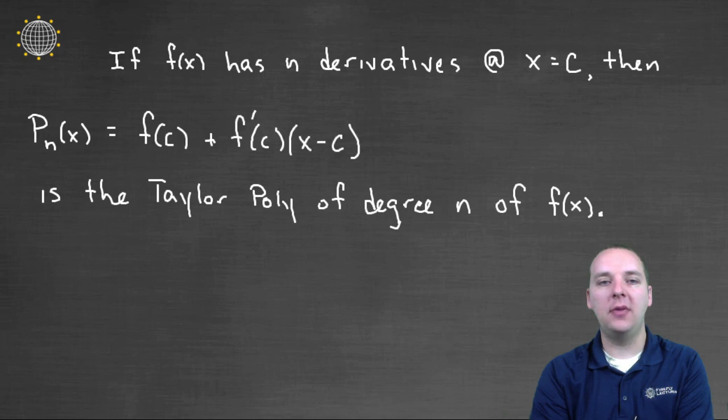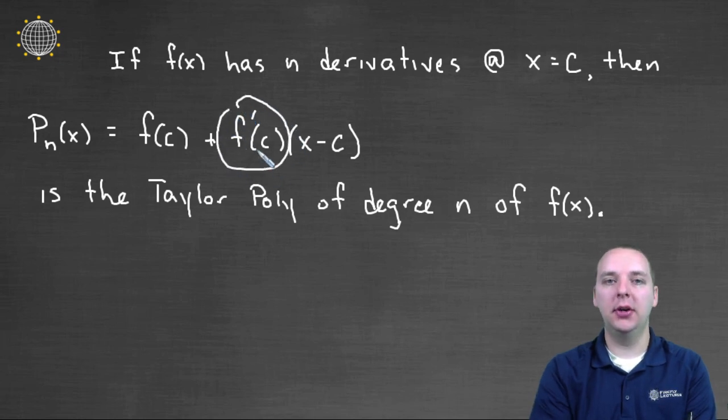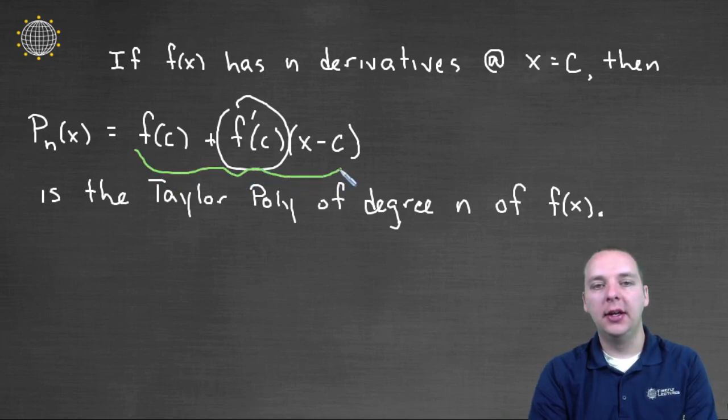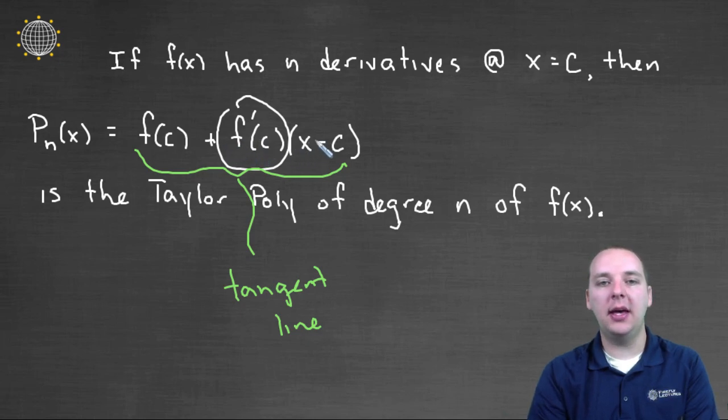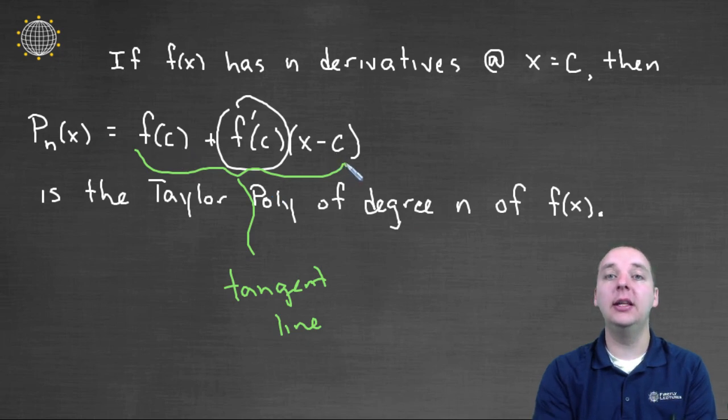So in addition to having the y-values match, the polynomial also includes f prime at c times (x minus c). Without going into a lot of detail, this guarantees that these slopes agree with one another. Matter of fact, you might even recognize these terms here. This is actually the definition of a tangent line. Because if you look at the right-hand side, isn't this linear? y equals mx plus b. You might have to simplify or rewrite some terms, but this is basically a tangent line, which is like a polynomial of degree one basically. So you're approximating little f by a linear function here.